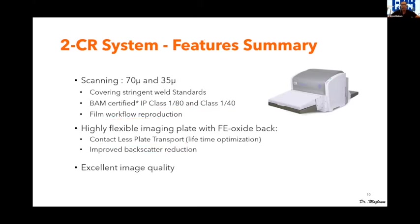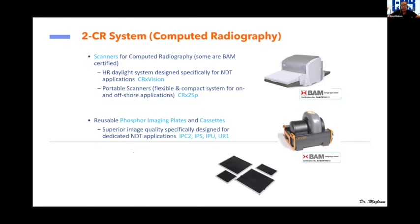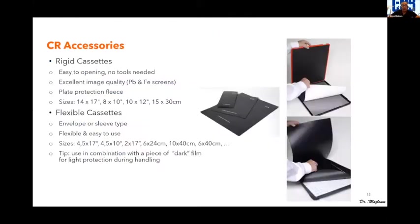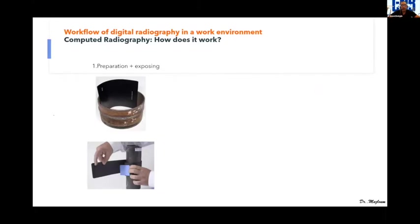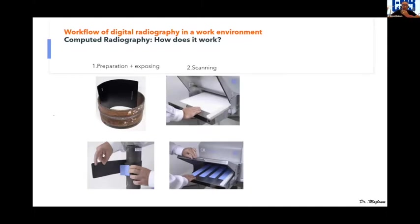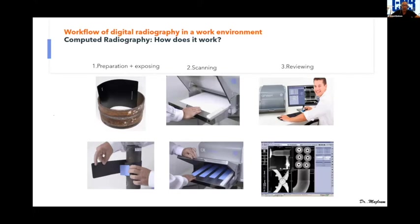We have different types of CR scanners — for film or roll — depending on the application or project. Film sizes include 14×17, 8×10 inches, 10×12, and 15×30 cm, and we have both rigid and flexible cassettes. CR involves three main steps: first, preparation and exposure using X-ray tubes; second, scanning the plate; and third, reviewing or archiving the image.